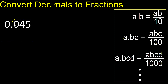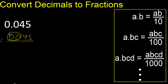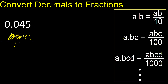First, all the numbers without a point — eliminate the leading zero, so the numerator is always number 1. After the point there are 3 numbers, therefore 3 zeros in the denominator.